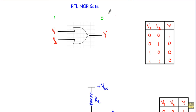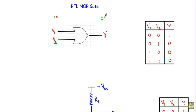In this video I will show you the operation of our RTL NOR gate. Here I have a two-input NOR gate with inputs V1 and V2 and output Y. The operation of a NOR gate is such that if we have at least a 1 at any of the input terminals, our output will be 0.